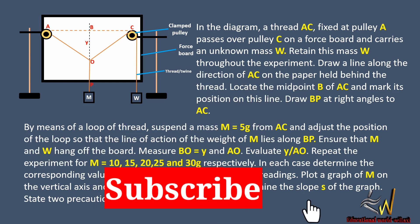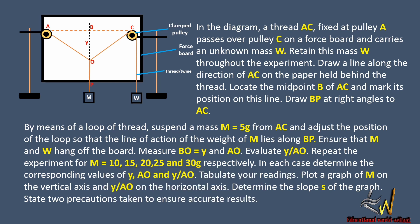I'll read the question. In the diagram, a thread AC fixed at pulley A passes over pulley C on a force board and carries an unknown mass W. Retain this mass W throughout the experiment. Draw a line along the direction of AC on the paper held behind the thread.